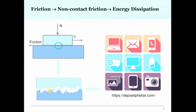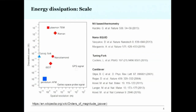Today everybody uses electronic devices, and we know that if we use them too much, they heat up. The reason is Joule dissipation caused by the ohmic resistance in these devices — some of the power we provide to operate them is lost as heat.